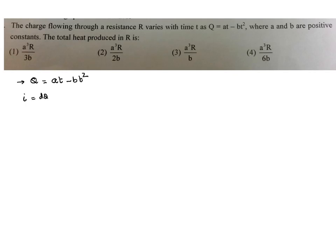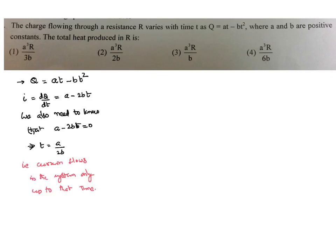I need to first find out the current, which is the rate of flow of charge. For that, I shall differentiate the above equation. That will become a minus 2b times t, since the differentiation of t equals 1 and differentiation of t squared equals 2t.